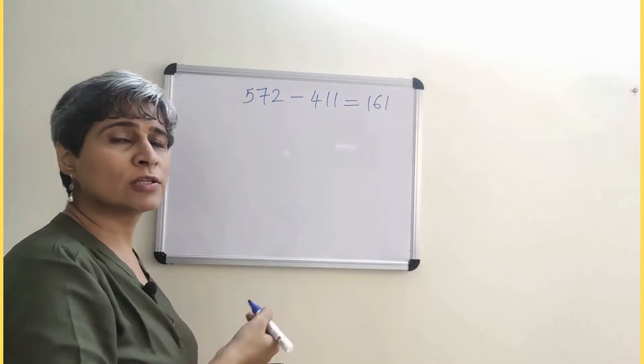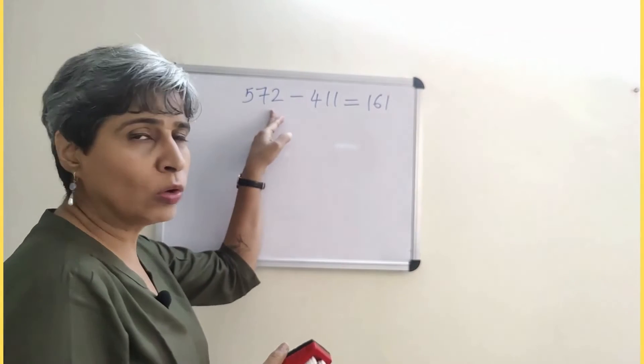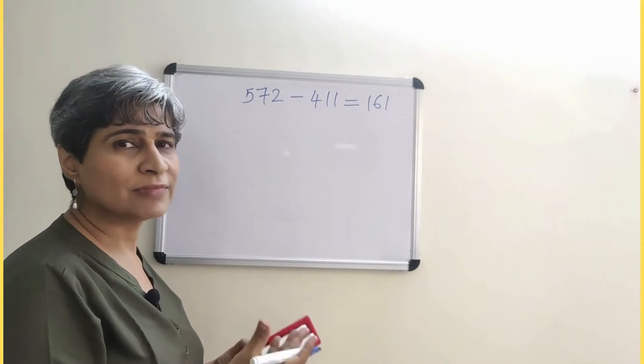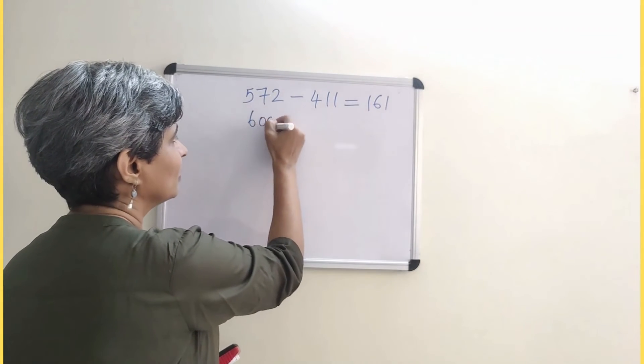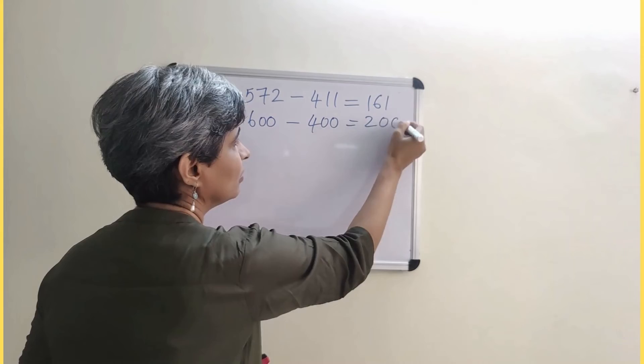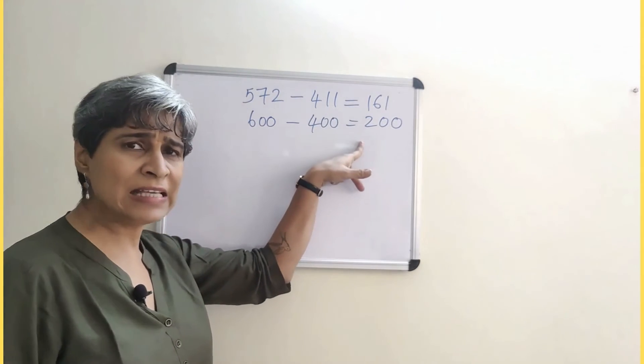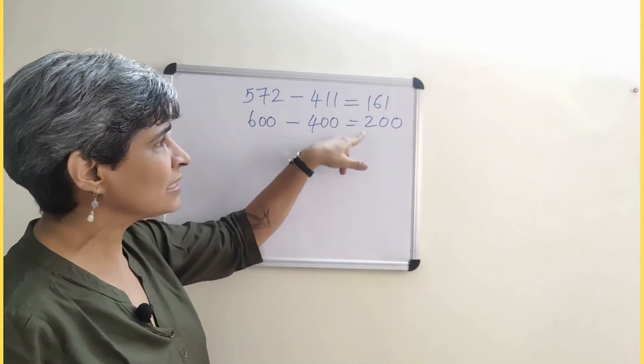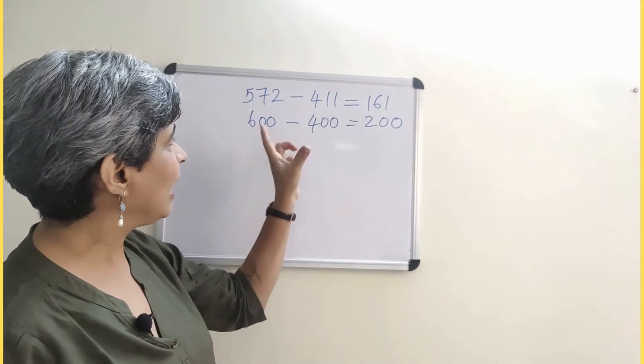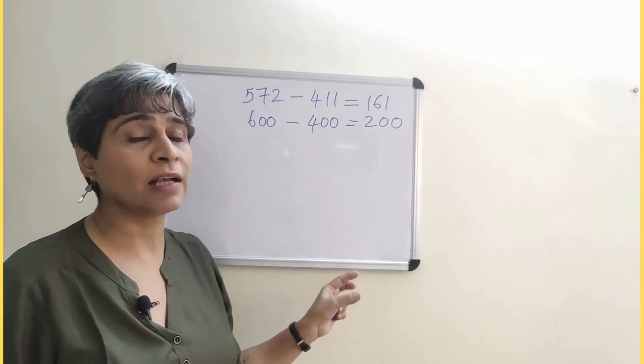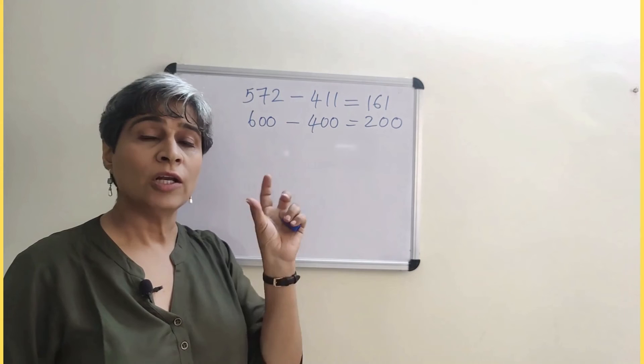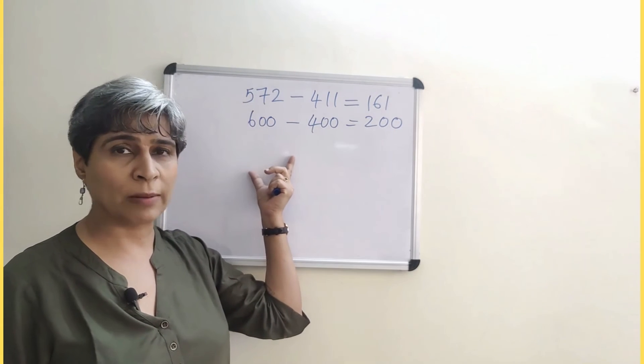572 is closest to which 100? I'm rounding off the whole number. Closer to yes, 600. This is closer to 400. I get a 200 here. You can see that this is a little bit of a variation, but it's still a reasonable answer. I can recheck and find out yes, is it completely correct or not.